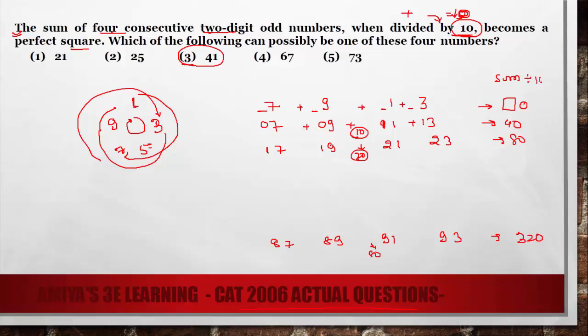Now the question is, when sum divided by 10, we get a perfect square. The perfect square would be 4 if we divide. The next perfect square should be 9, then 16, then 25, then 36 which is not a condition. So we have 4, we have 9, we have 16, we have 25.